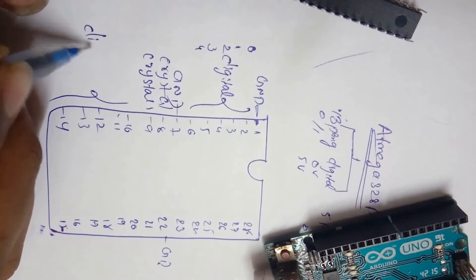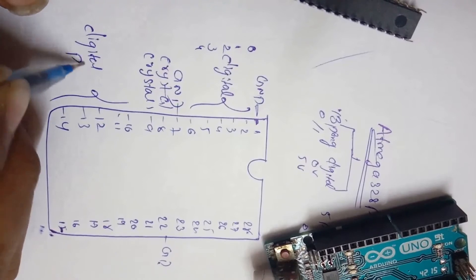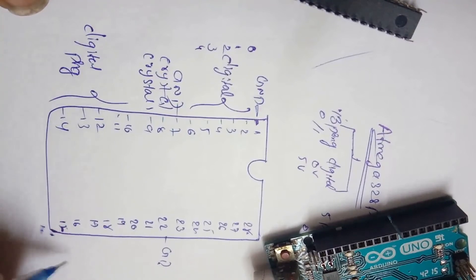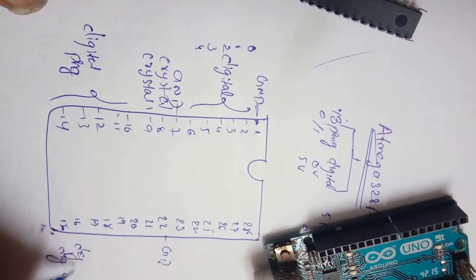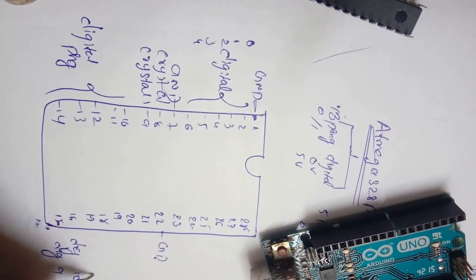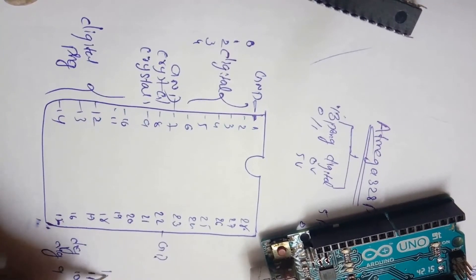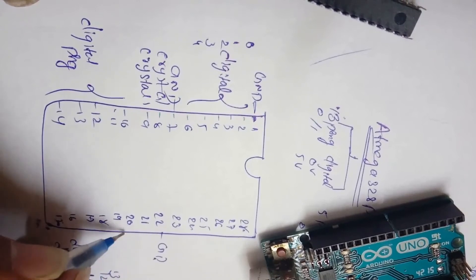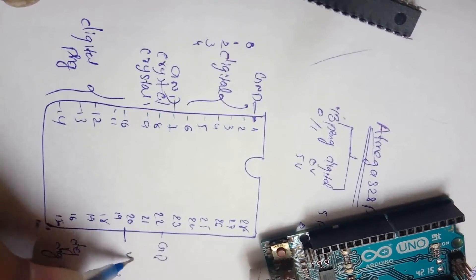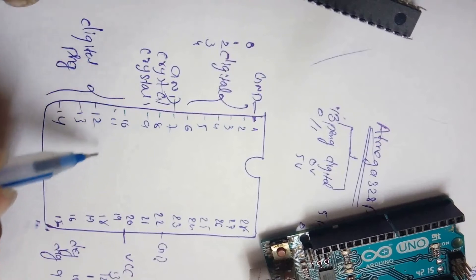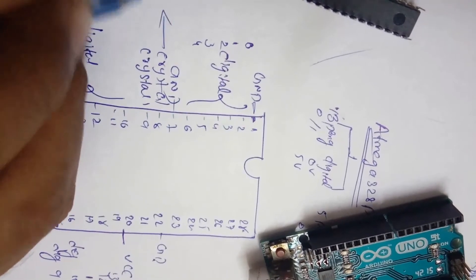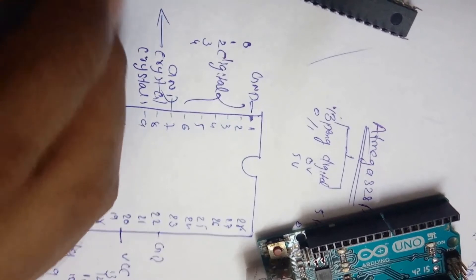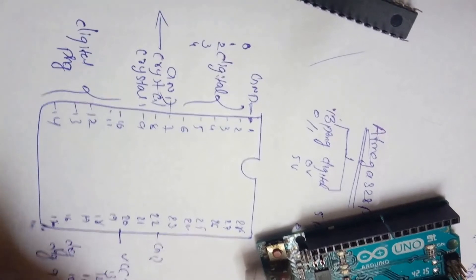And 10, 11, 12, 13, 14 are also digital pins. This is digital pin 9, digital pin 10, 11, 12, 13. Pin 20 is also VCC. Here pin 8 also VCC. Works under 5 volts. This is also 5 volts.